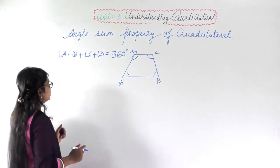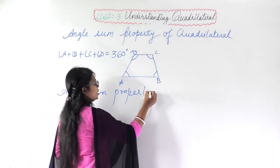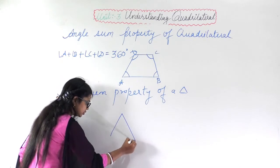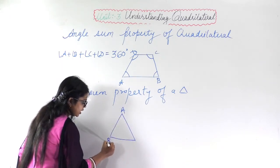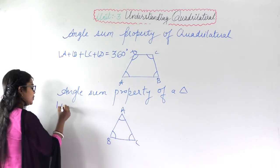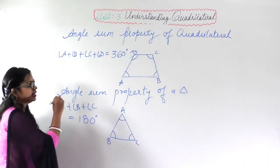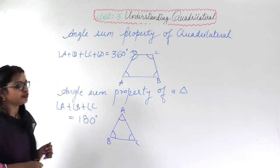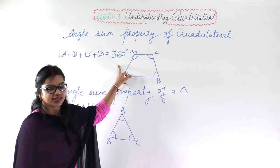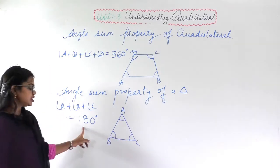Please go and watch that theorem from there. Similarly, for the angle sum property of a triangle ABC with angles A, B, and C: angle A plus angle B plus angle C will be equal to 180 degrees. Remember this — it will be used in many questions. For a quadrilateral, angle A + B + C + D = 360°; for a triangle, angle A + B + C = 180°.